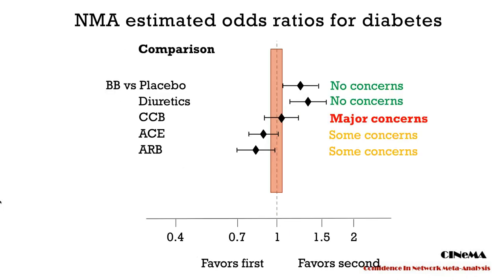More specifically, if the 95% confidence interval does not cross any of the boundaries, then we suggest there are no concerns of imprecision. If one boundary is crossed, then there are some concerns. And if both boundaries are crossed, then there are major concerns.